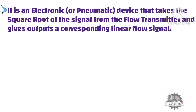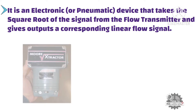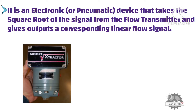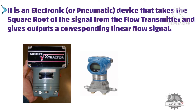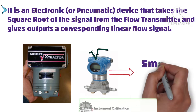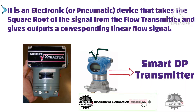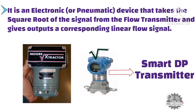In other words, it takes the square root input milliampere signal from the DP transmitter and converts it into a linear milliampere signal. As you can see from the picture, the square root function was performed in a separate device called a square root extractor in the days of pneumatic instrumentation. Nowadays, all smart DP transmitters come with a square root extractor function — the user can select the square root extractor function from the transmitter.